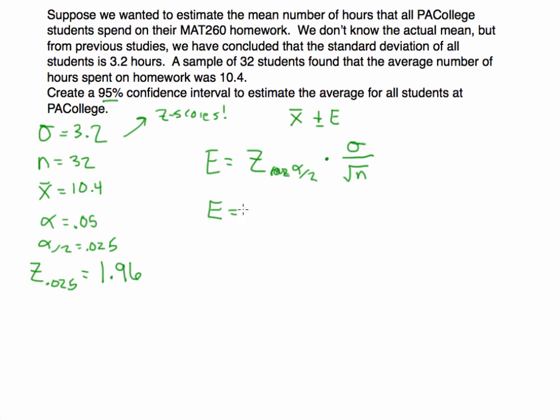So we can plug all this information in. Z alpha over 2 we already calculated - this is the z-score for a 95% confidence interval. We know the population standard deviation is 3.2, and the square root of n is the square root of 32. Let's put all this in our calculator: 1.96 times 3.2, divided by the square root of 32. What we get is approximately 1.11. That's the margin of error.